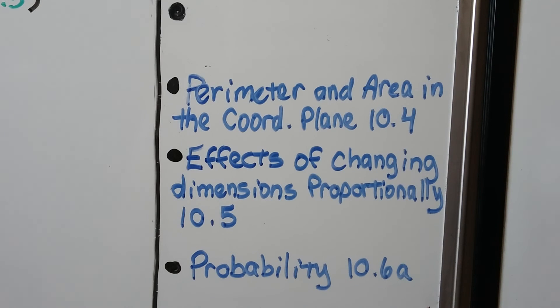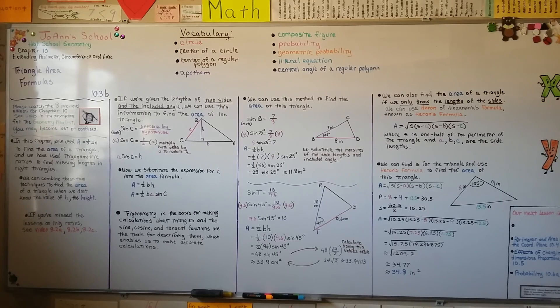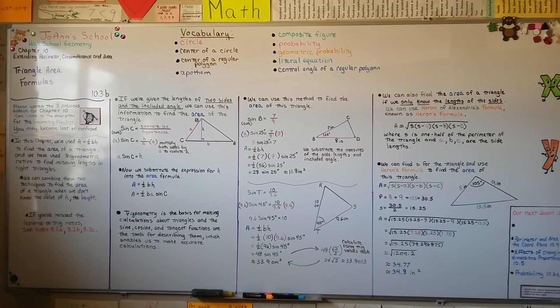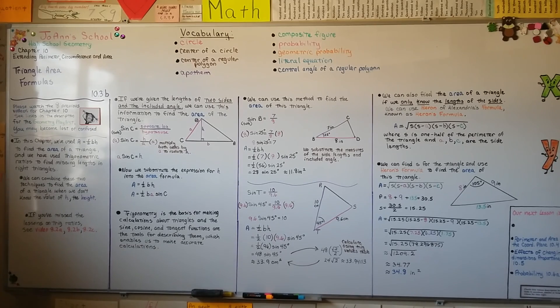So that's it for lesson 10.3. Now we're going to move on to 10.4 and talk about perimeter and area in the coordinate plane. We're going to follow that with effects of changing dimensions proportionally in 10.5. Then we're going to move on to probability and geometric probability in 10.6. So now you know there's more than one way to find the area of a triangle. I hope you're having a great day, and I hope I'll see you for our next lesson.